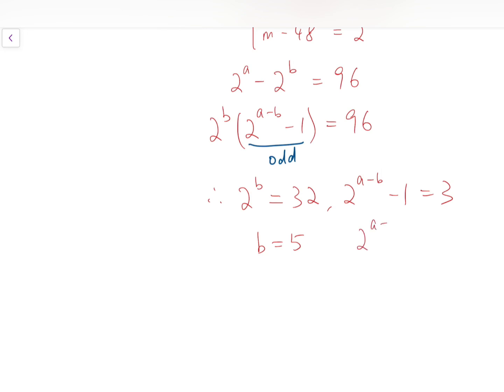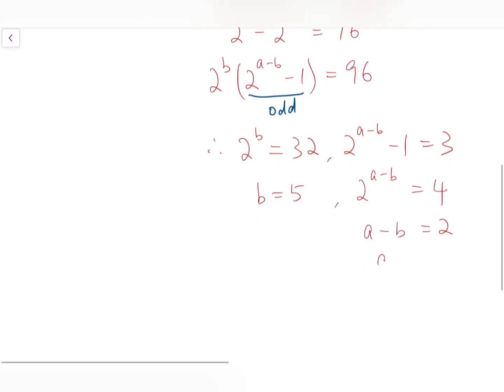And 2^(a-b) equals 4, which implies a - b equals 2, and so we have got a as well, and that is 7.